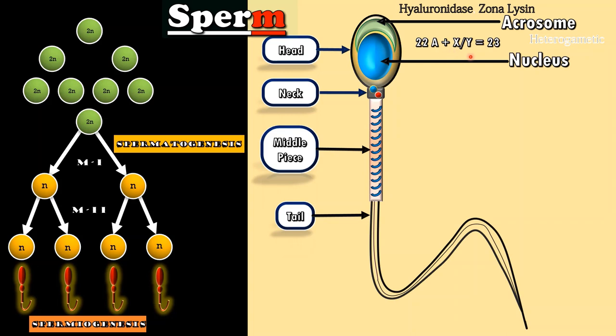It contains hydrolytic enzymes such as hyaluronidase and proteolytic enzymes such as zonal lysine. These are useful for sperms during fertilization process. The nucleus contains 23 chromosomes with either X or Y type of sex chromosome. That is 22 autosomes and X or Y type of sex chromosome.